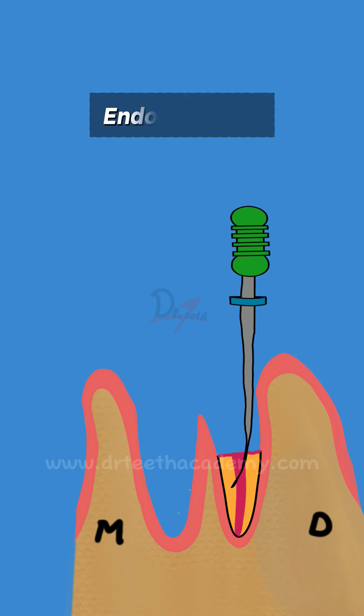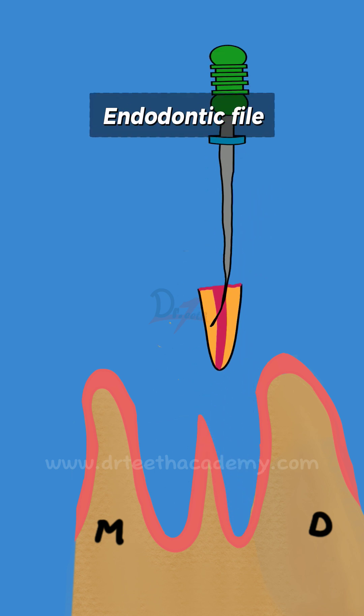One method is to use an endodontic file. You can screw the endodontic file in and take out the root piece.